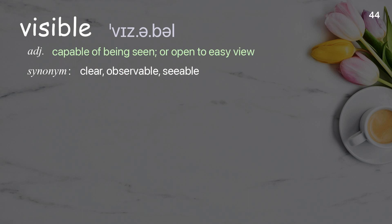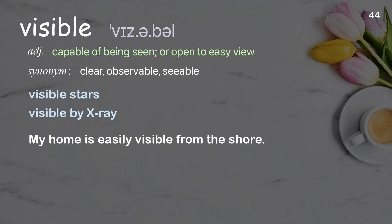Visible: Capable of being seen, or open to easy view. Examples: Visible stars. Visible by x-ray. My home is easily visible from the shore.